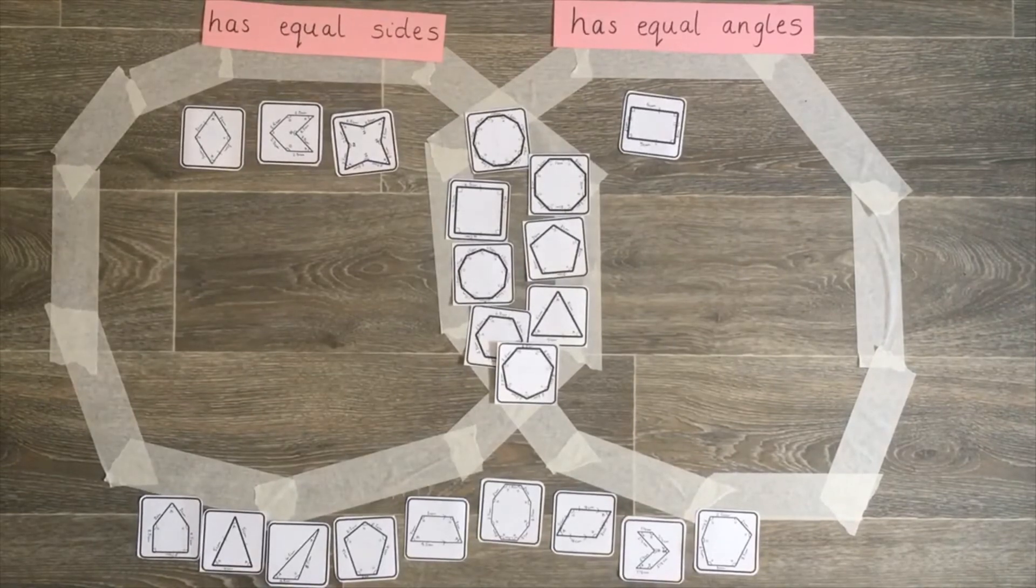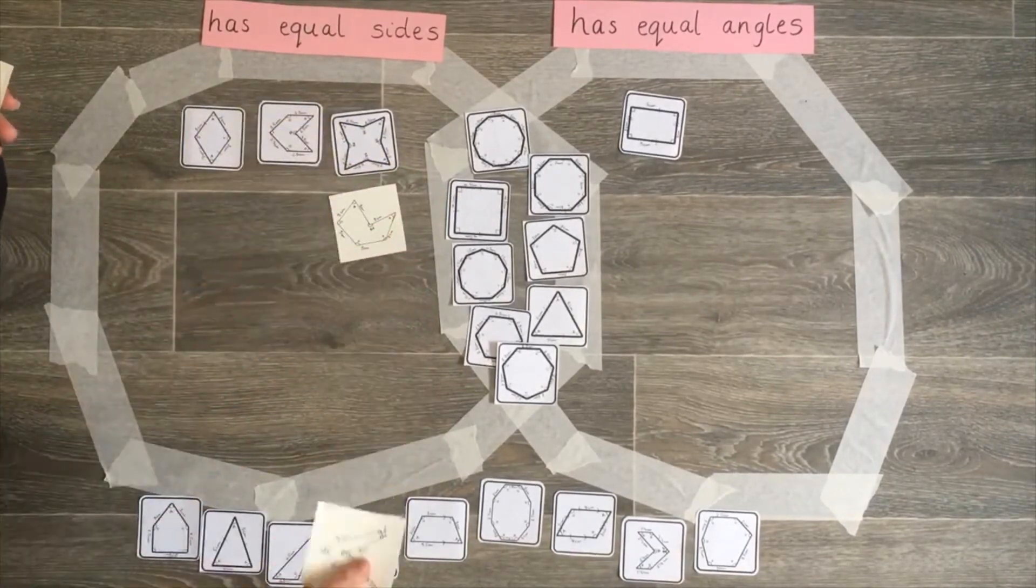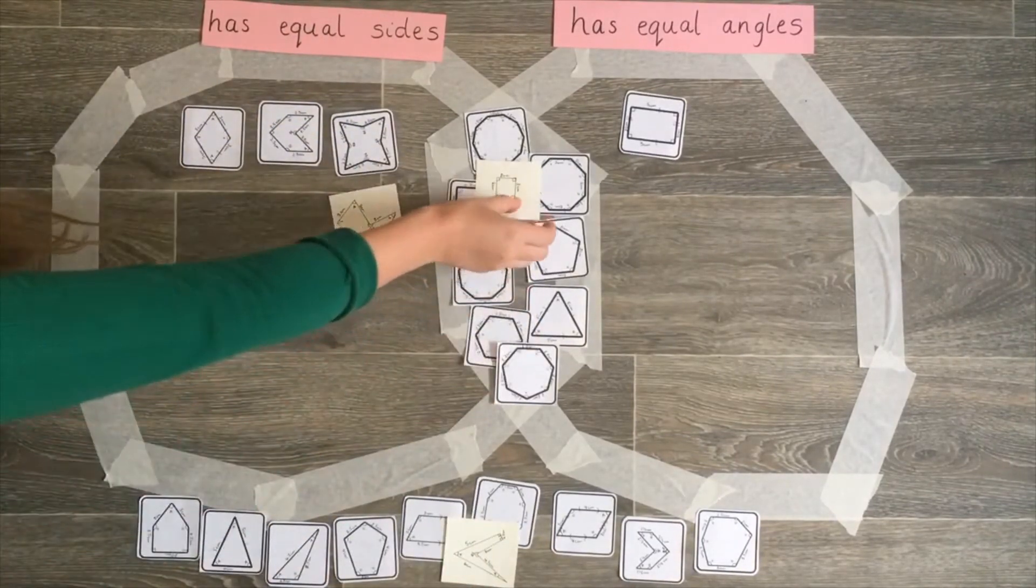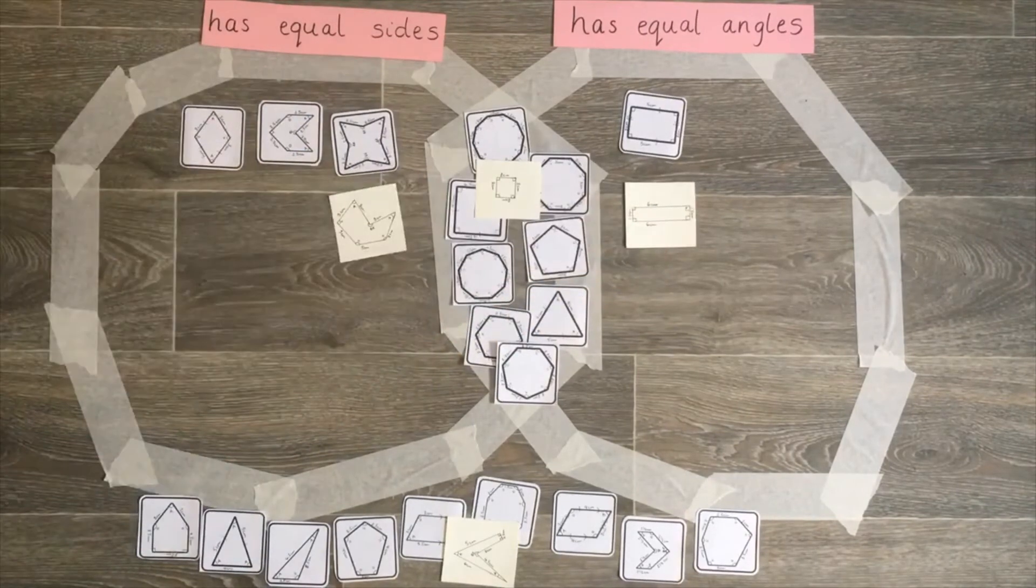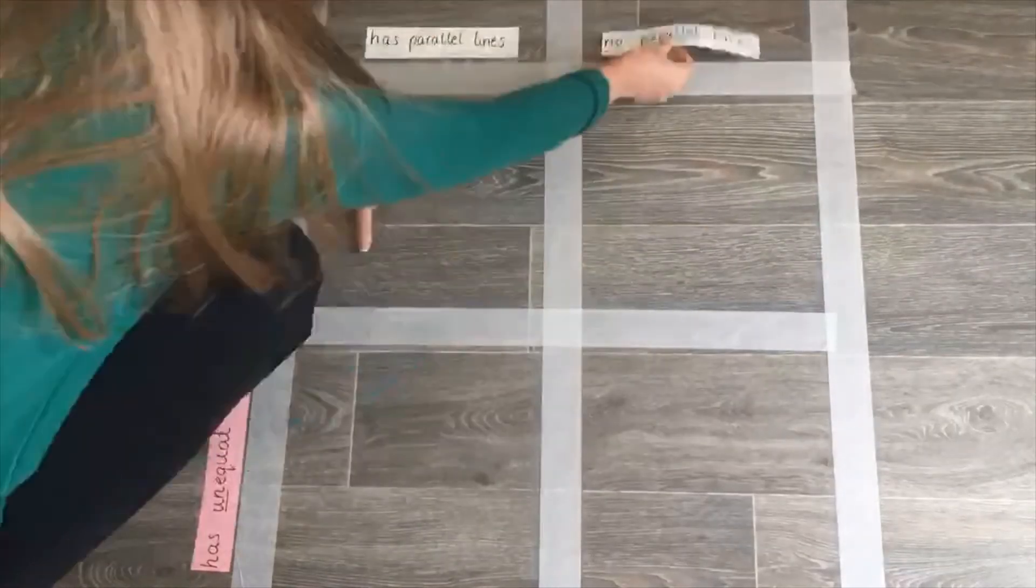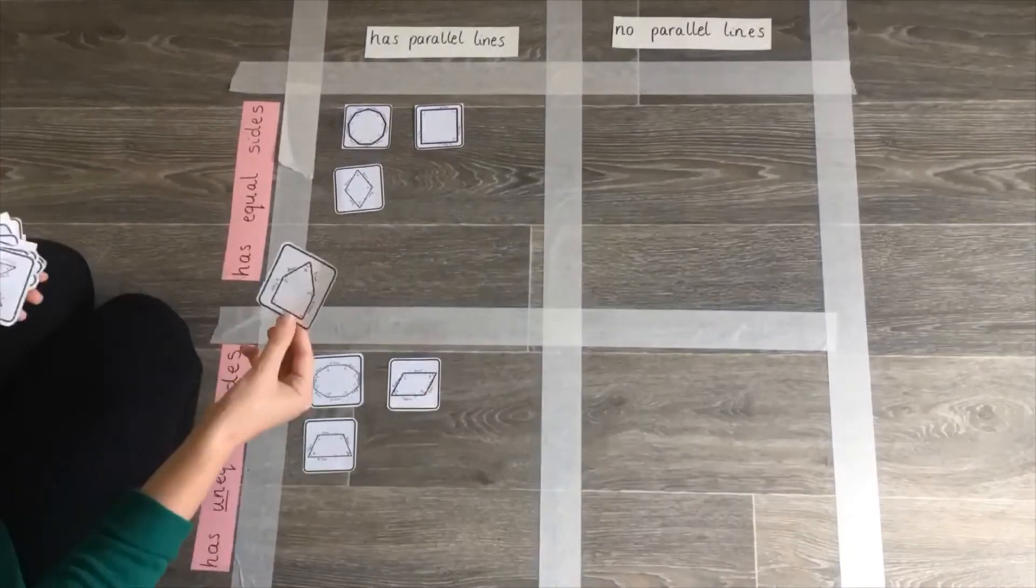Next we're going to get a bit creative to add a bit of stretch to this activity. Challenge their drawing skills by asking them to add a new shape to each section of the sorting diagram. Or, can learners change the headings and find a new way to sort the shapes?